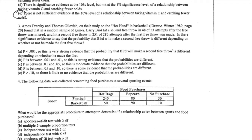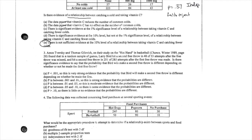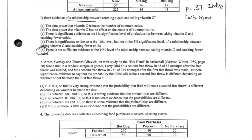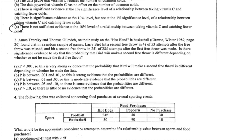Number three is different. This question gives you counts instead of all the different cell values — it gives you so many out of some total. So it's giving you totals and it doesn't give you a two-way table directly. There are two ways to look at this question.